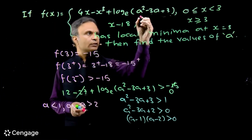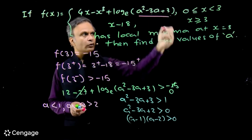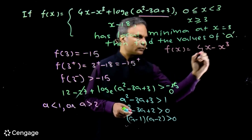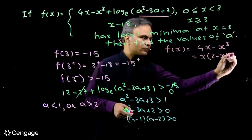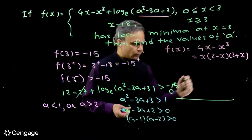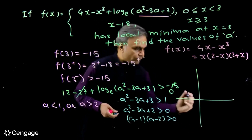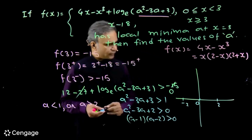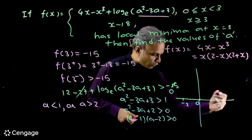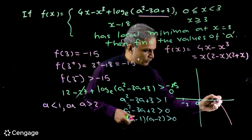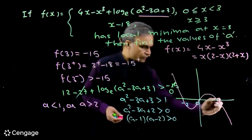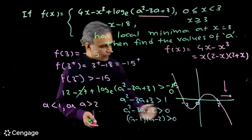Now let's check the boundary cases a=1 and a=2. For a=1 or a=2, the expression a²−3a+3 equals 1, and log(1)=0, so the branch function becomes 4x−x³. This is x(2−x)(2+x); the graph intersects the x-axis at 0, 2, and −2. With a negative leading coefficient, the graph rises on the left. In the region near x=3, the function is decreasing.